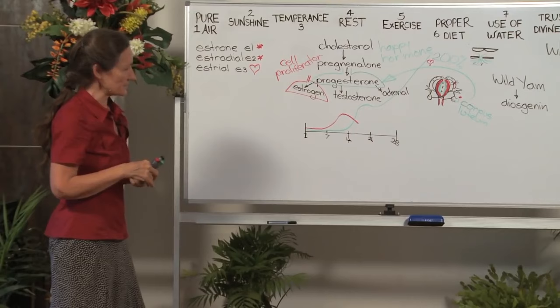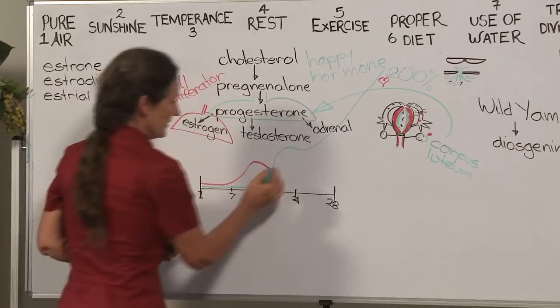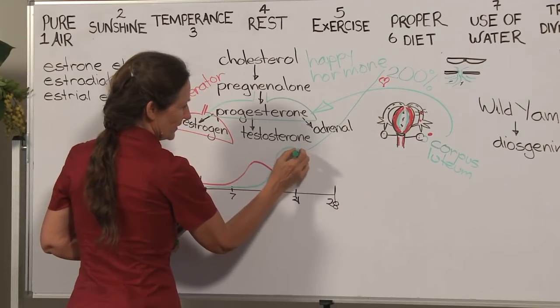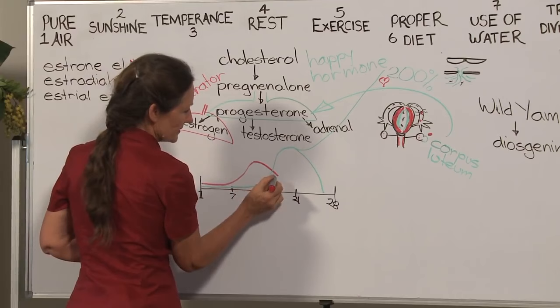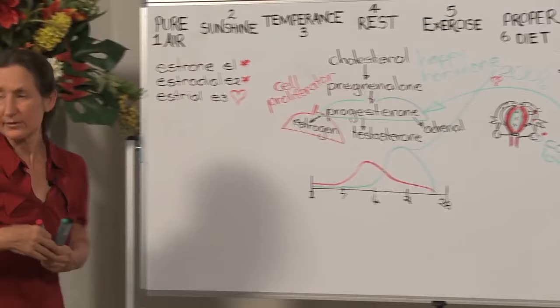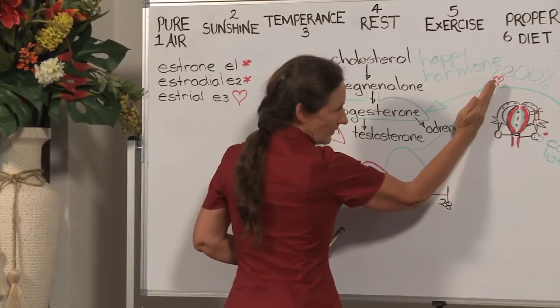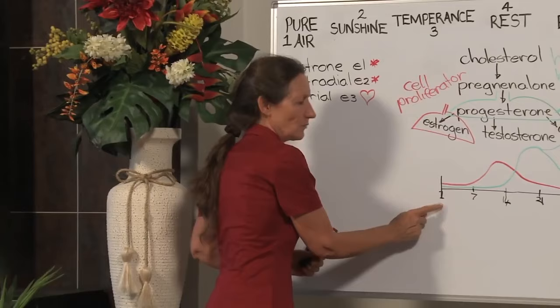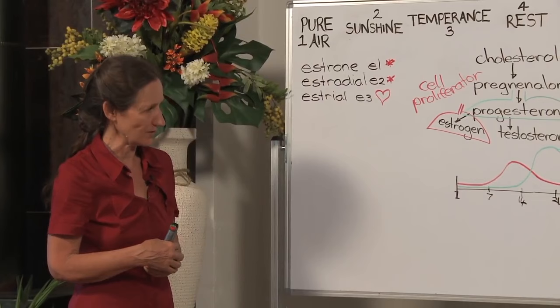So what happens if there is no conception? Then by day 26, progesterone levels are dropping. By day 26, estrogen levels are dropping. When both of those levels drop, then the blood supply to the uterus is cut. And when the blood supply to the uterus is cut, the blood nest falls away. And once again, we are at day one of the monthly cycle, which is the day that a woman begins to menstruate.